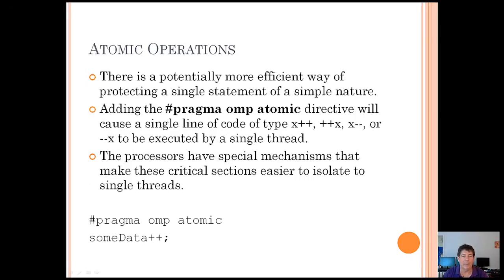Using omp critical is great if you have a lot of code — maybe 10, 20, or 30 lines. But if you only have a single line of code, such as a unary operator like plus plus or minus minus, there's a potentially more efficient way of protecting a single statement. Adding the #pragma omp atomic directive will cause a single line of code of type x++, ++x, x--, or --x to be executed by a single thread. This takes advantage of mechanisms most processors already have, making these critical sections far more efficient. For example: #pragma omp atomic, sum_data++.